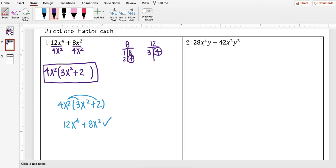Okay let's try another one. So now I have 28x to the fourth y minus 42x squared y cubed. So I want to start with my smaller number 28 and write out those factors. So I have 1 times 28.